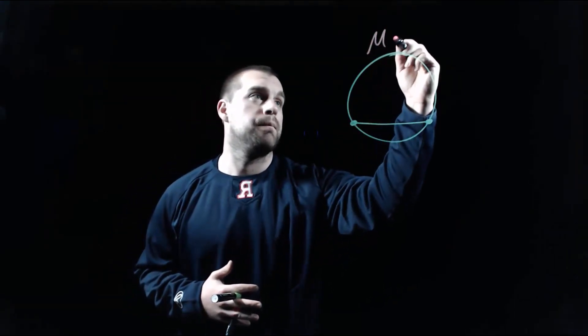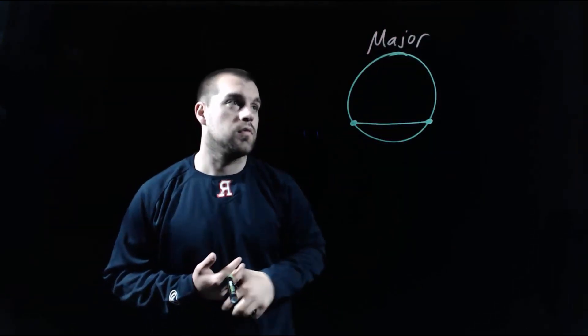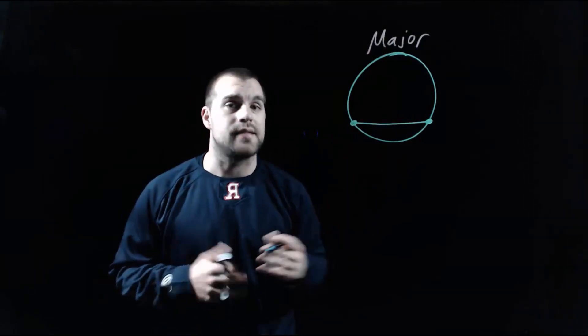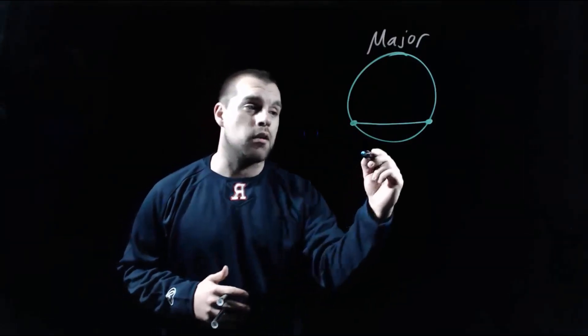Now remember, when we're talking about a circle and a chord, a chord is a segment that has both of its endpoints on the outer edge of our circle, and what that does is it splits our circle into two smaller arcs. The top arc, since it takes up most of the circle — it's over halfway — this is a major arc, and the bottom arc, since it's less than half the circle, is a minor arc.